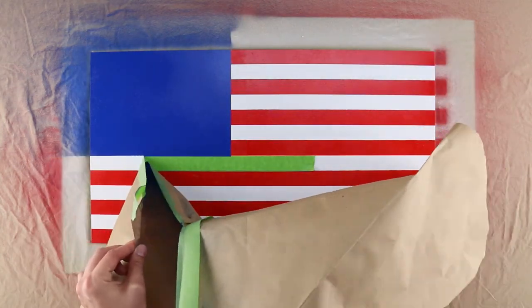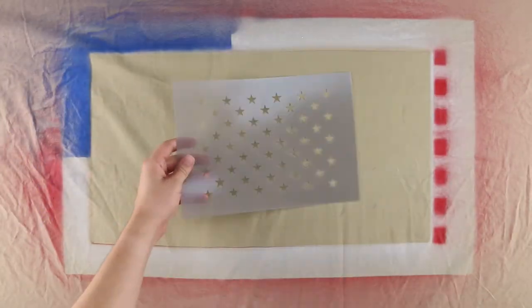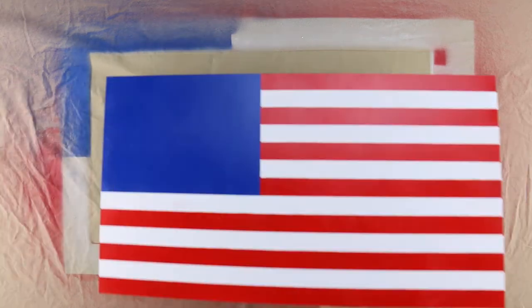Set your project aside to completely dry while you prepare the stars stencil. Flip the stencil over and use repositionable spray adhesive, then give it 30 seconds to become tacky.